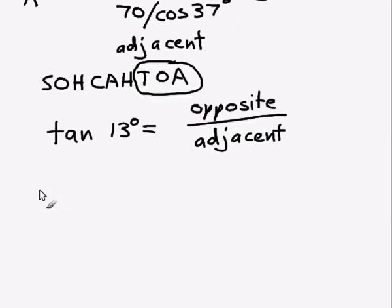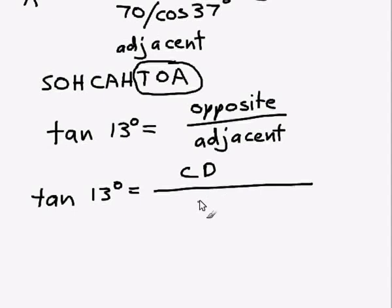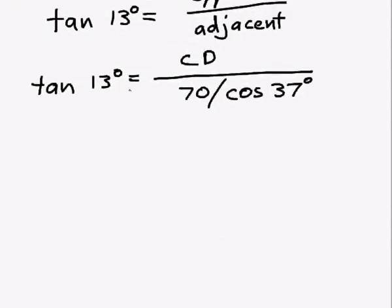Now, our opposite side is the side we're trying to find out the length of, side CD. Our adjacent side is the side we know the length of, it's 70 on cos 37 degrees. So by not introducing numbers too early, we can keep it as accurate as possible.